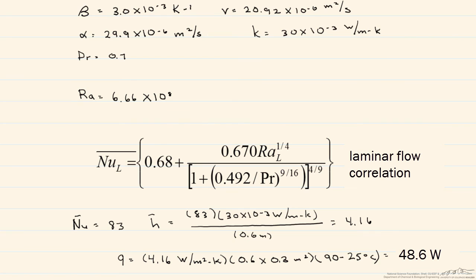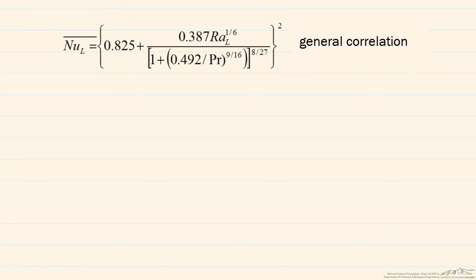Now let's take a look at the more general correlation and see what kind of values we get. When we put in our values, same values as above, we end up with a Nusselt number that's equal to 108.